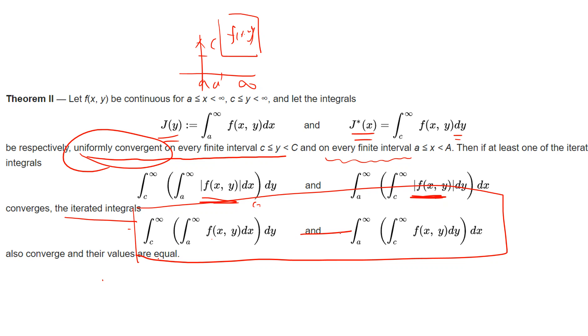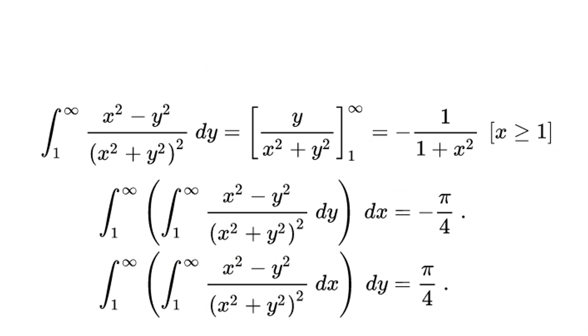If you want to provide an example which does not satisfy this property, the most easy case is that you provide a function which will go to infinity. A simple example is if I take f(x,y) to be (x² - y²) divided by (x² + y²)².